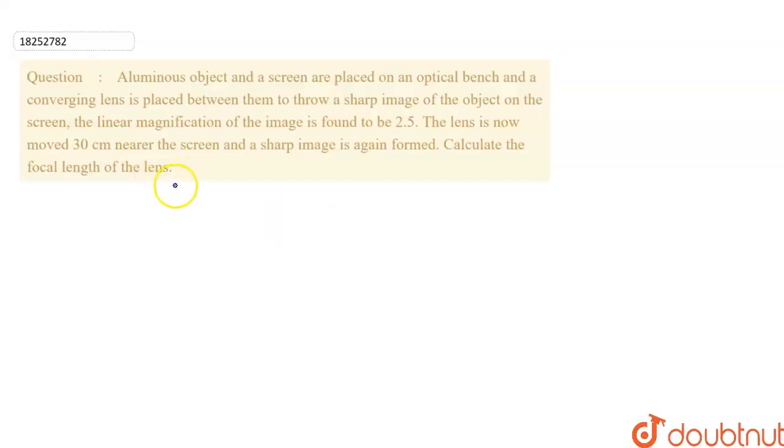Hello everyone, we will solve this question. A luminous object and a screen are placed on an optical bench and a converging lens is placed between them to throw a sharp image of the object on the screen. The linear magnification of the image is found to be 2.5. The lens is now moved 30 cm nearer to the screen and a sharp image is again formed. Calculate the focal length of the lens.